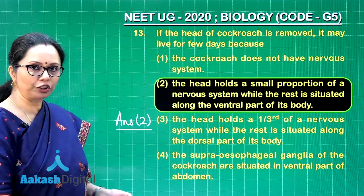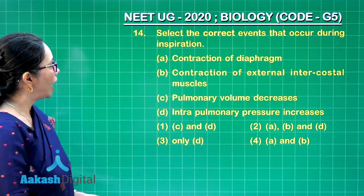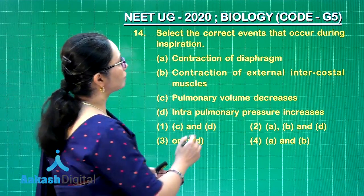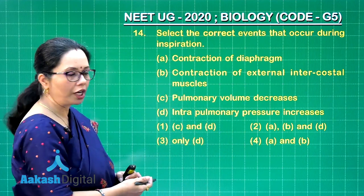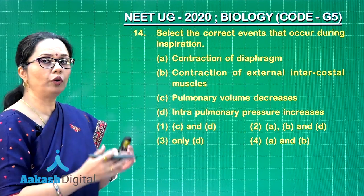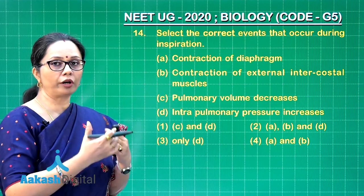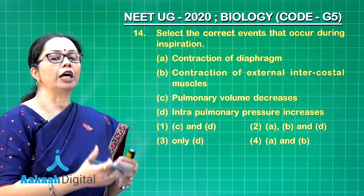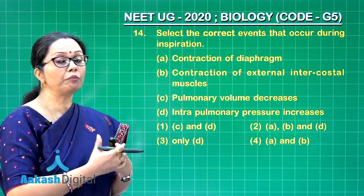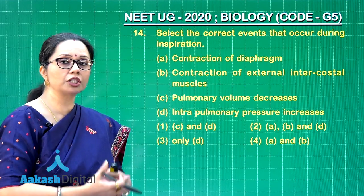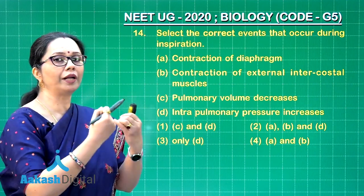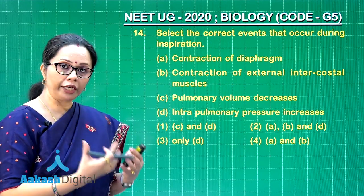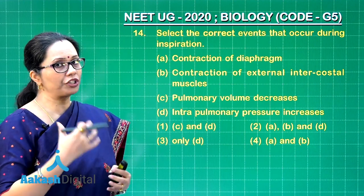Question 14: Select the correct events that occur during inspiration. Inspiration is an active process involving contraction of the diaphragm, which flattens from a dome-shaped structure, and contraction of the external intercostal muscles so that the ribcage is pulled outward and upward. As a result, thoracic volume increases and pressure decreases.